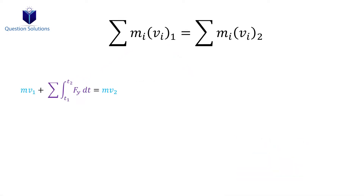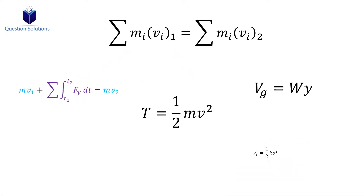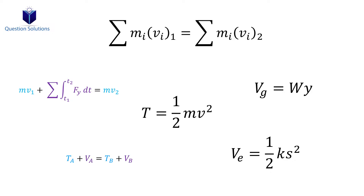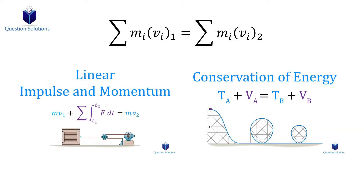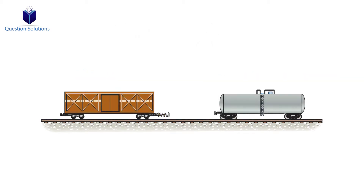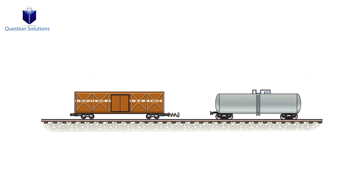The questions you will face in this chapter heavily rely on principles from previous chapters, like linear impulse and momentum, conservation of energy, and more. So if you forgot those principles, please take a look at the description to get back up to speed. Let's get started with some examples.